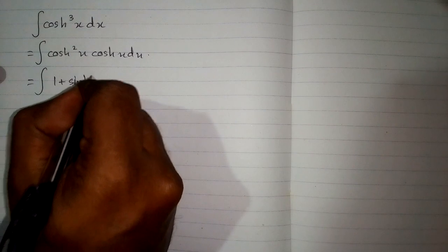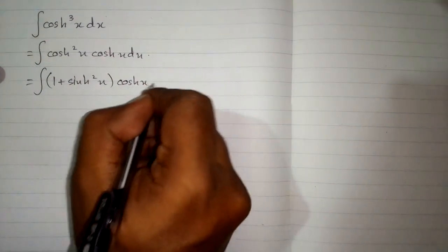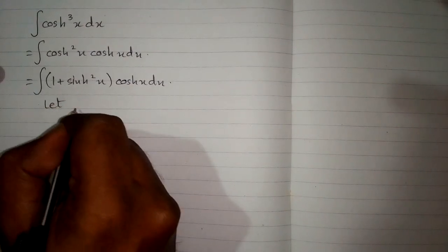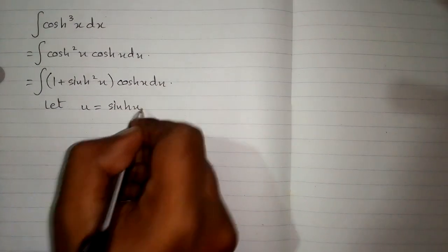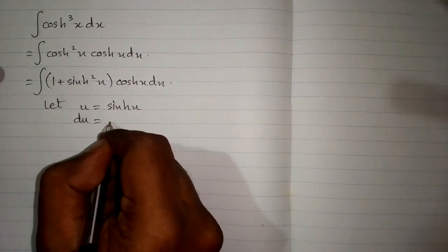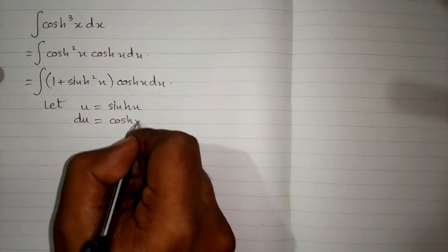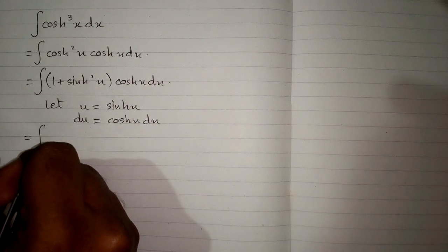Now let u equal hyperbolic sin x, so the differential du is equal to the derivative of hyperbolic sin x, which is hyperbolic cos x. In the above integral, we will put u in place of hyperbolic sin x.